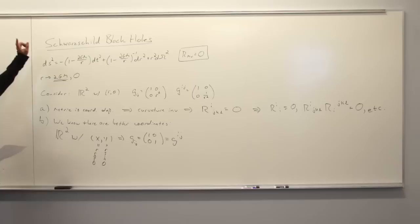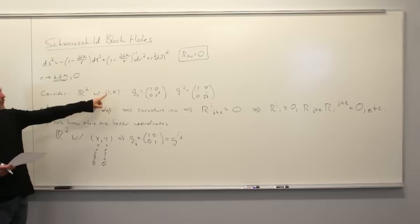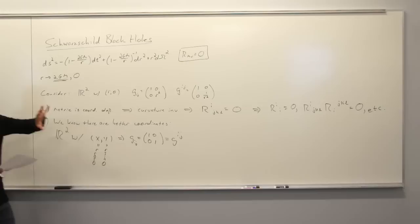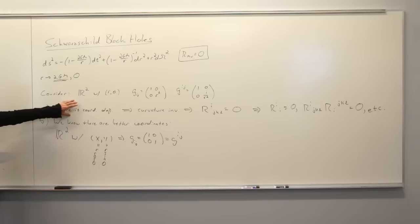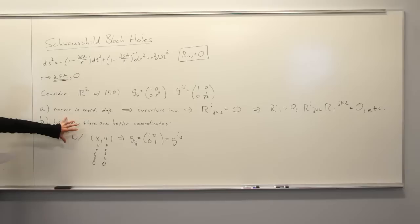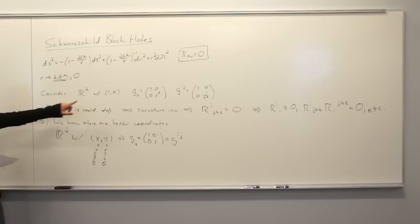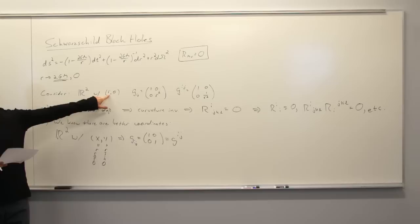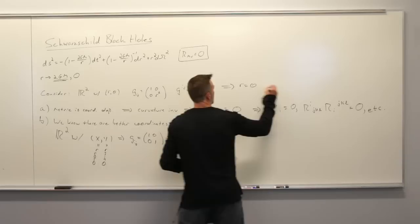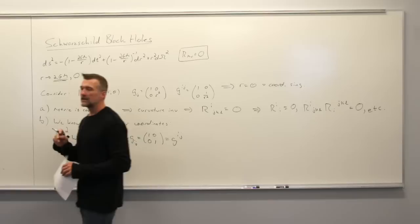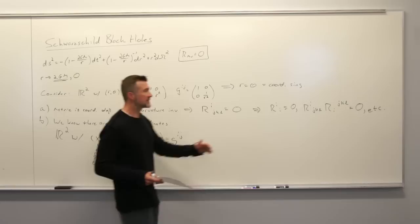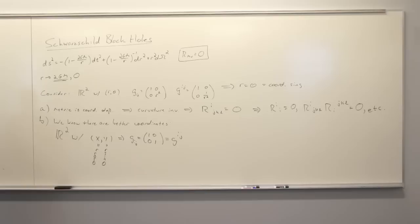The moral is: there are situations where a coordinate taking a particular value can make the metric look crazy. But by analyzing the curvature invariants and finding better coordinates where it's obvious nothing crazy is happening, we call such a singularity of the metric a coordinate singularity — not a curvature singularity. A curvature singularity by contrast is one where the curvature invariants would blow up. Coordinate singularities are just reflections of a bad choice of coordinates; there's nothing really interesting happening at least in terms of the curvature.